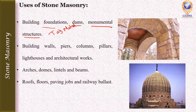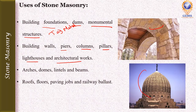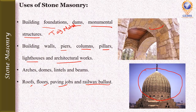Stone masonry is also used for building walls, piers, columns, pillars, lighthouses, and architectural work. It is used for arches, lintels or beams, roofs, floors, paving jobs, and even railway ballast. These are the uses of stone masonry.